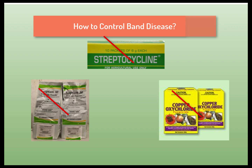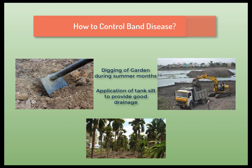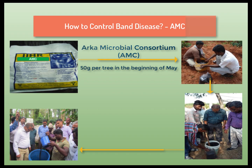Soul of Krishi suggests not to apply or spray any chemicals, fungicides, or antibiotics to control Band disease, as it is not caused by any pathogens. We recommend digging of Areca nut gardens during summer months to provide good drainage for water and to increase air supply to roots. Apply Areca Microbial Consortium or AMC at the rate of 50 grams per tree during the beginning of first showers in May, and mix well with the soil.